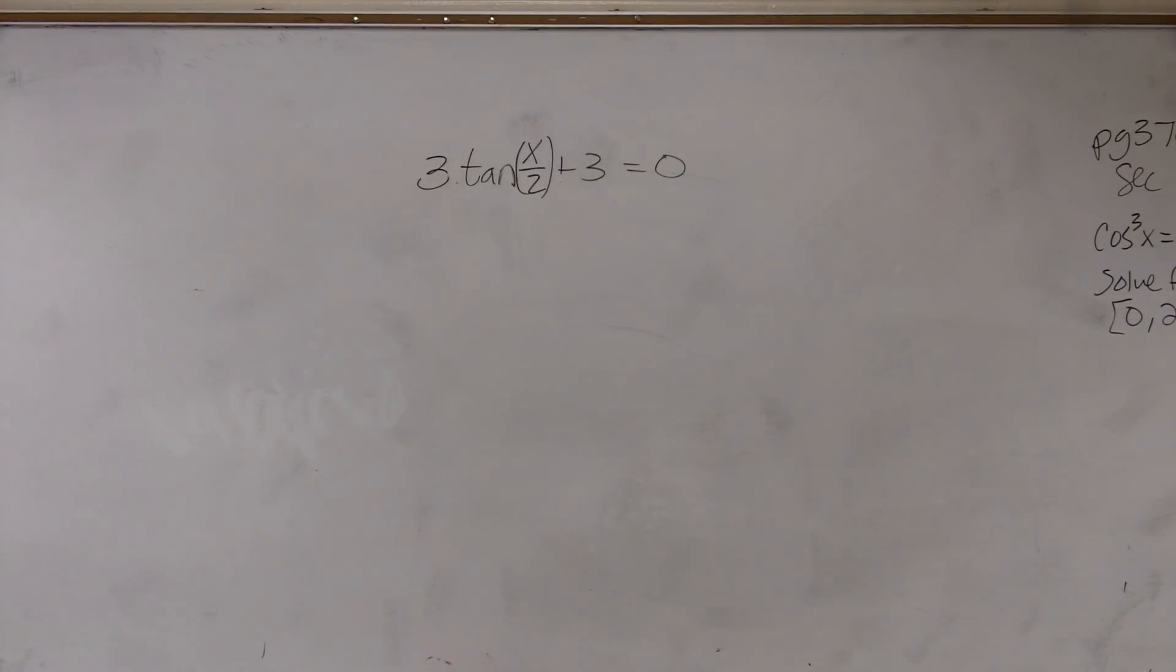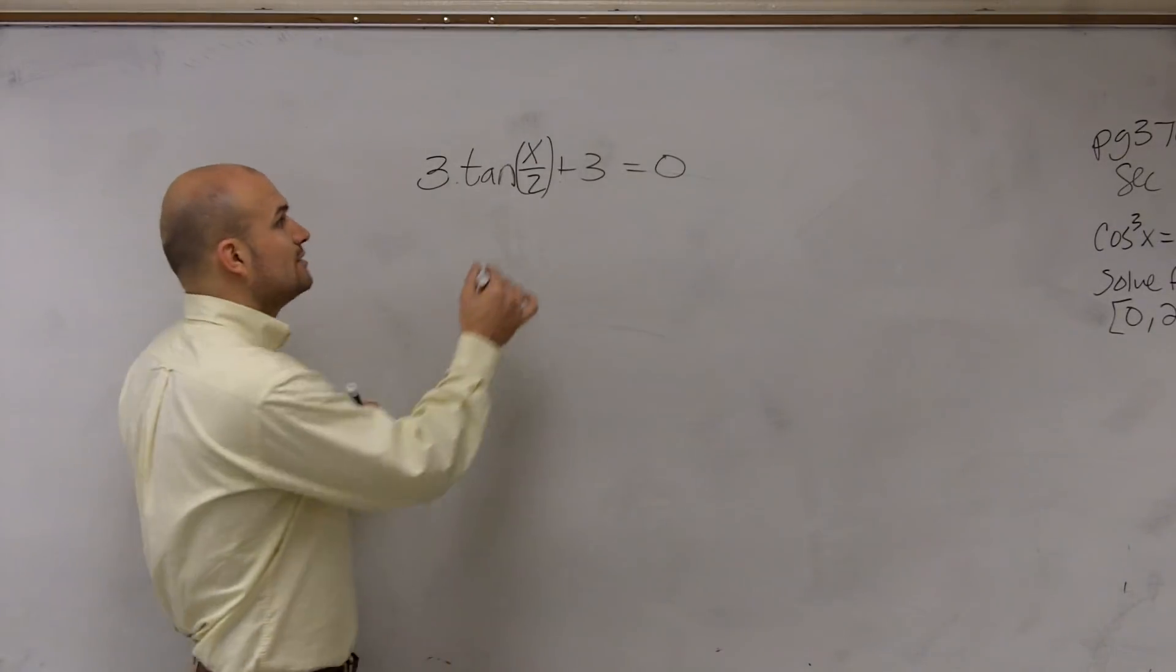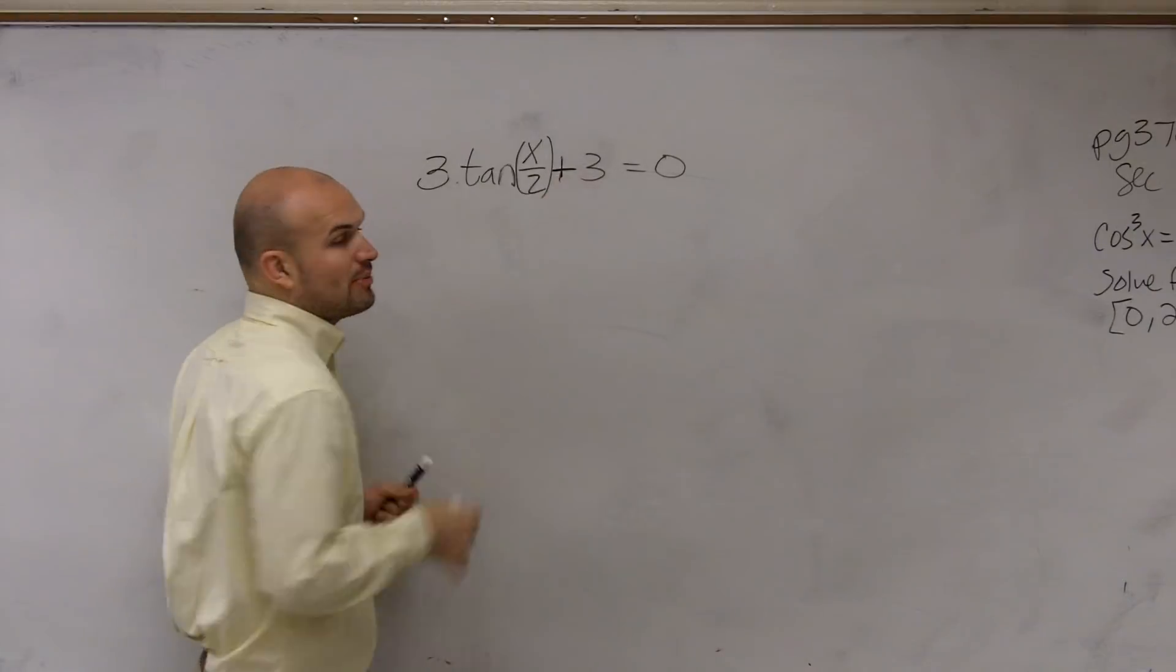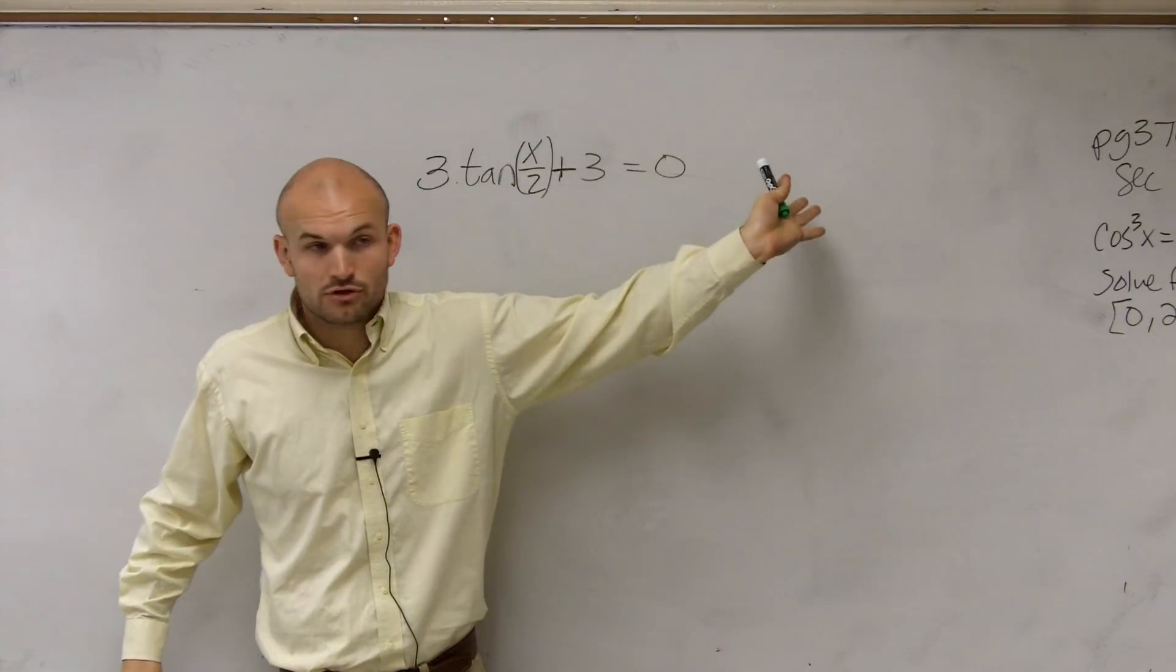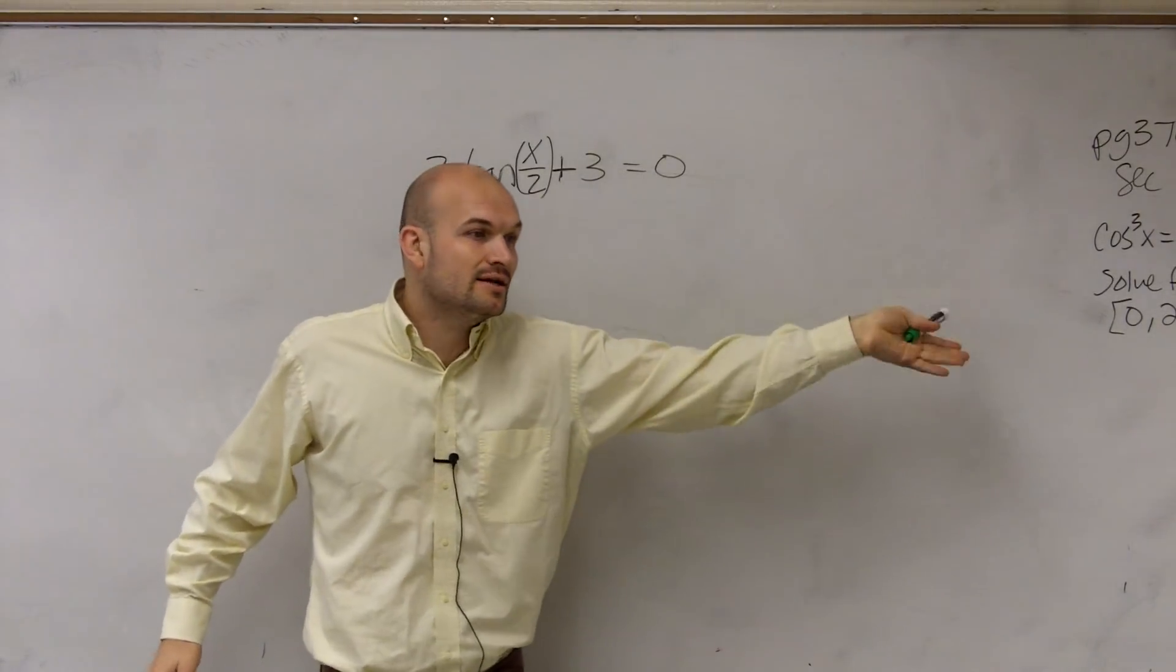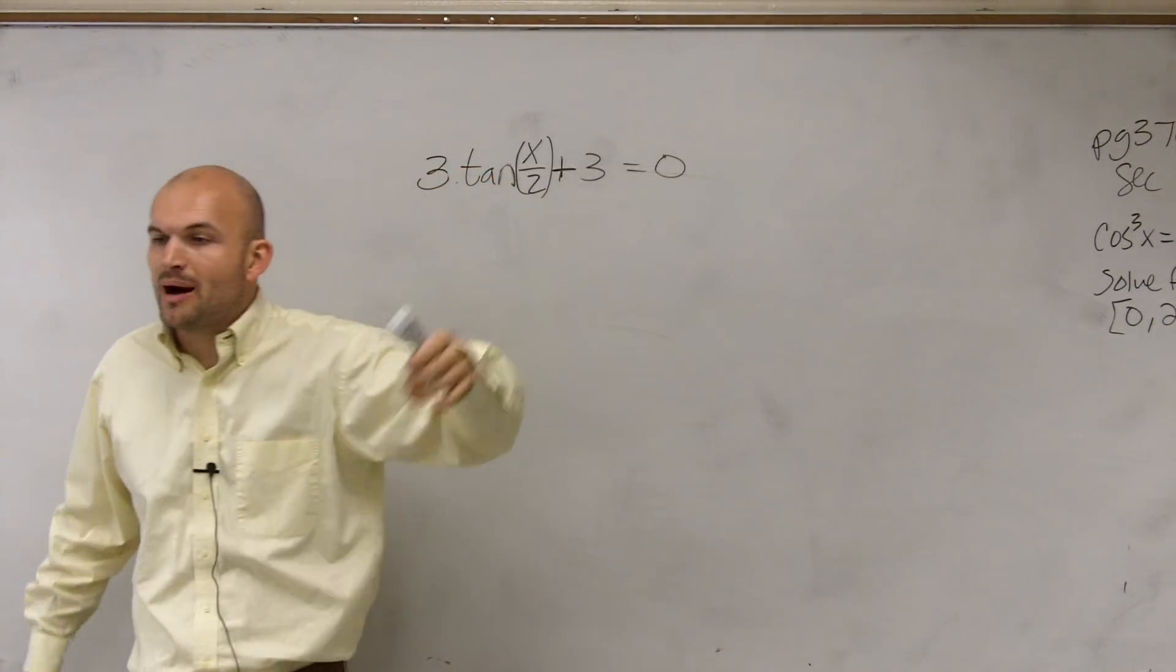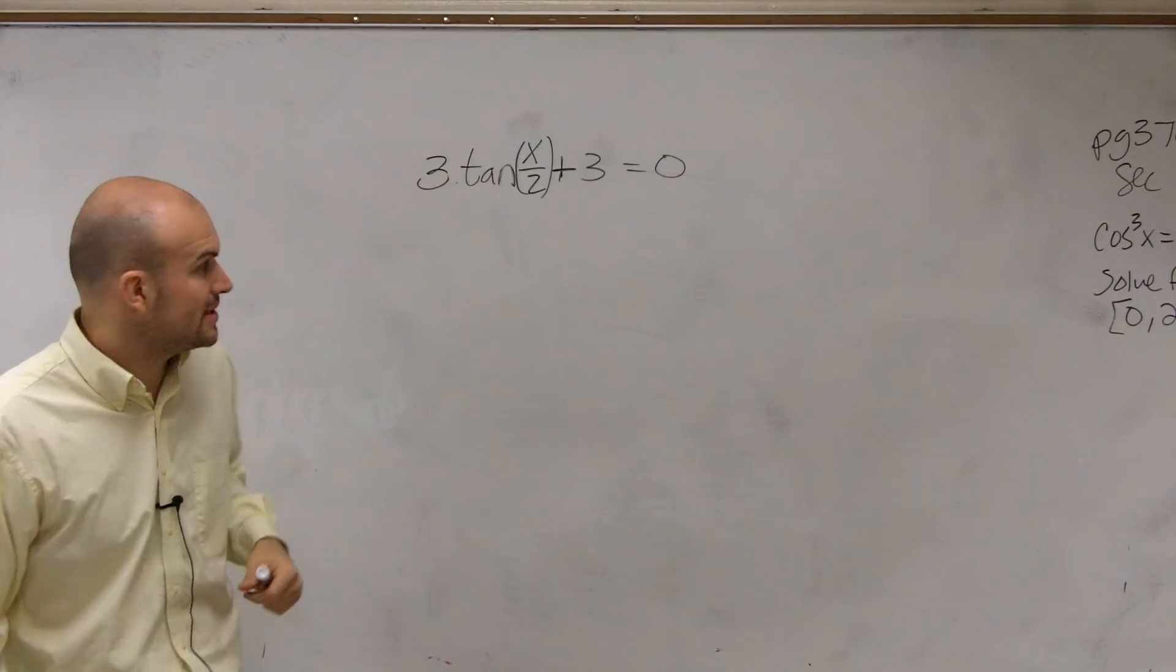Let's go and look at this. So what I have now is I have 3 tangent of x divided by 2 plus 3 equals 0. So to solve a problem like this, we notice that there's no constraint for our solution. We have no constraints. So therefore, we're going to have to either add 2 pi n or pi n for our answer, which we'll all explain again.